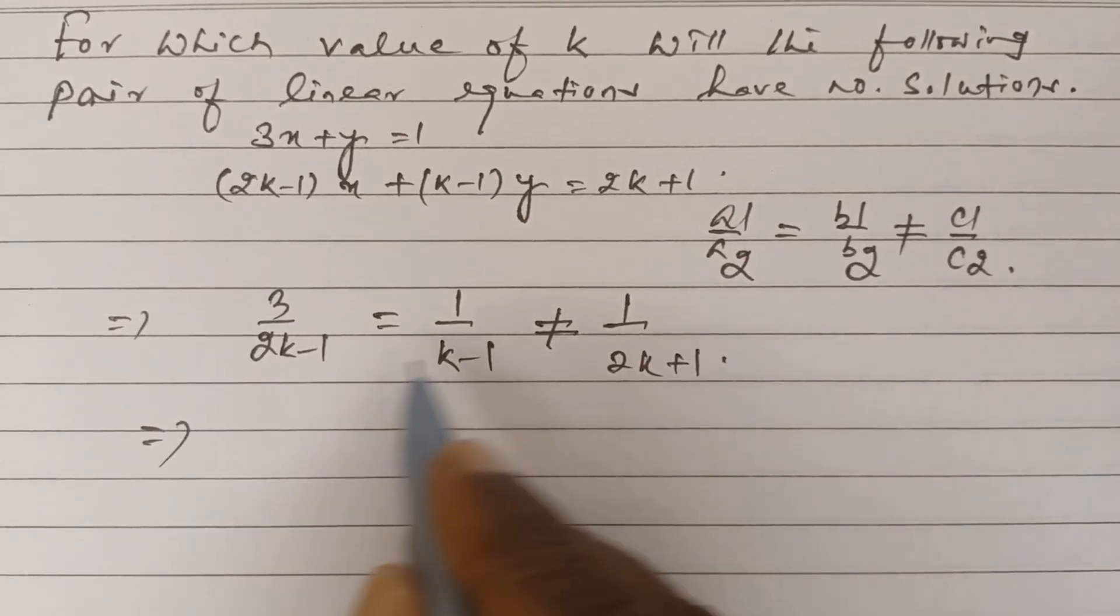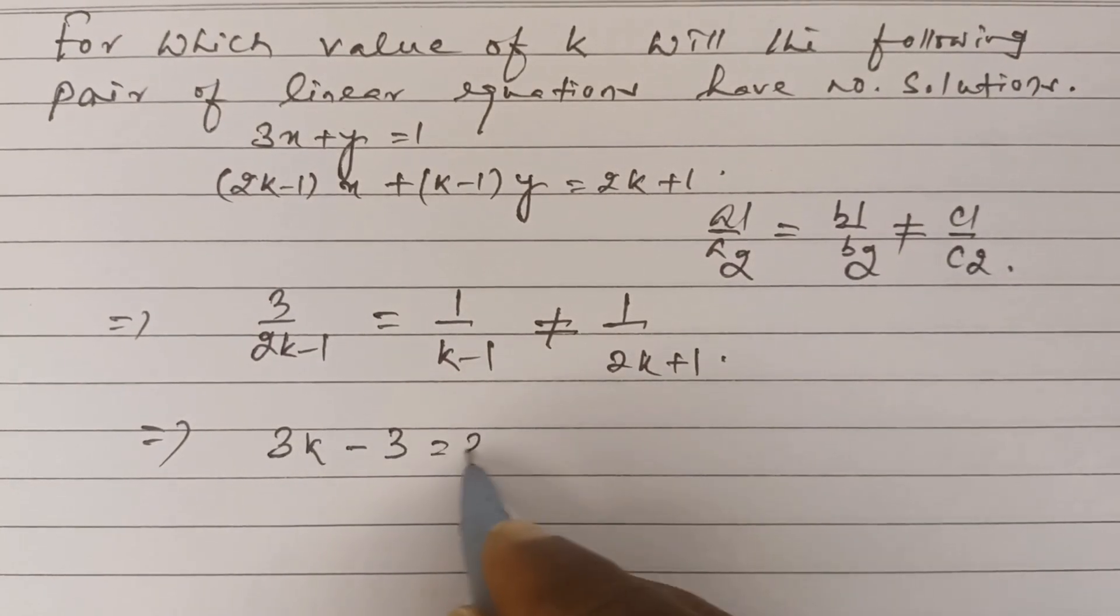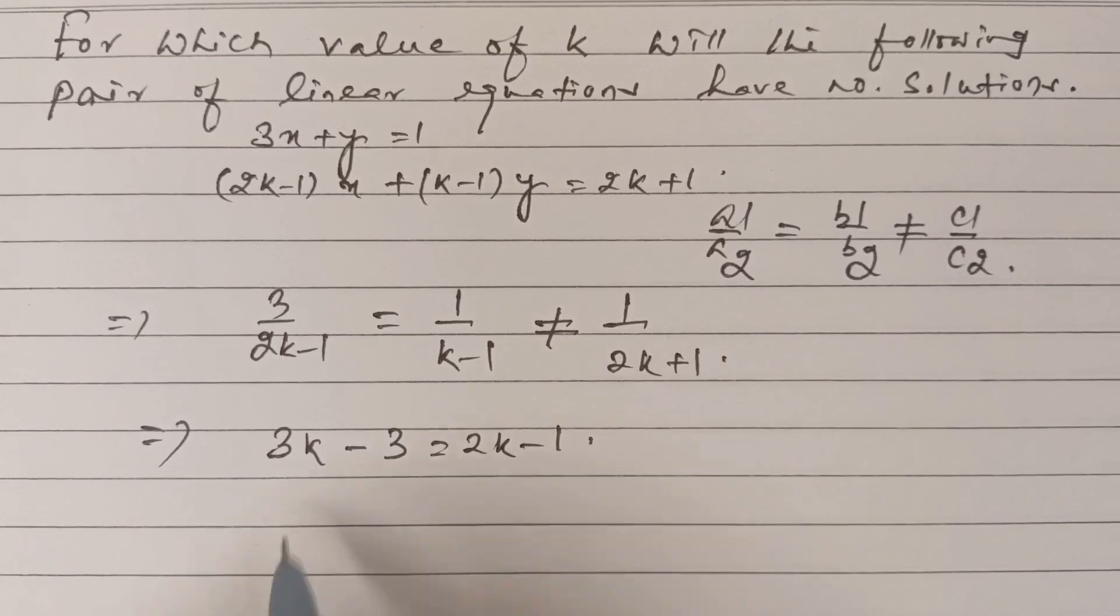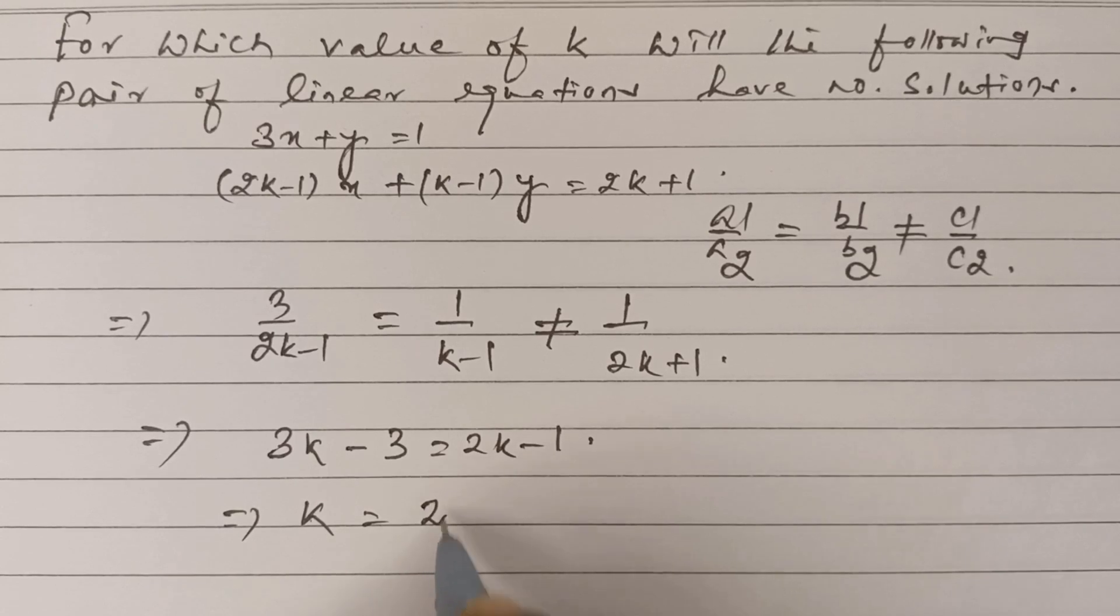Equating first and second, this is 3k minus 3 is equal to 2k minus 1. So k is equal to 2.